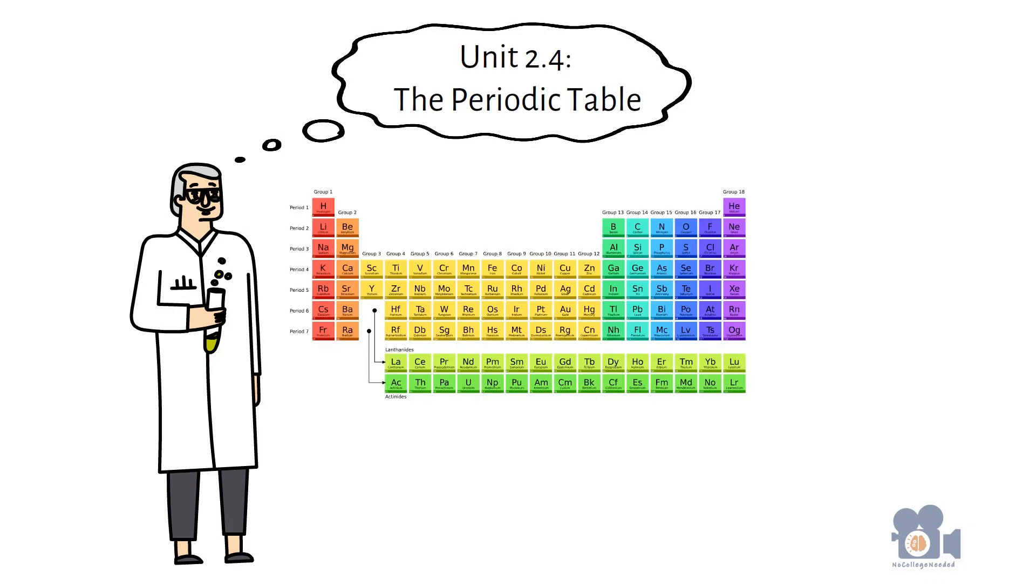As more and more elements were discovered by scientists in the 19th century, efforts were made to find patterns in order to classify the known elements in a systematic and predictable manner. These efforts resulted in the periodic table. We will be going over the periodic table much more in depth in future units, but now is a good time to give you an introduction to the most significant tool that chemists use for organizing chemical facts.